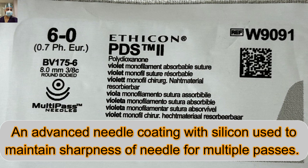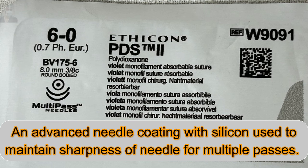Like this 6-zero needle — a very fine needle — it is a three-eighths circle with a smaller circle. The length is 8 mm and it is a round body. You can see there is a circle with a dot inside — it is a round body and the tip is blunt. This is just for demonstration: the smaller the needle, basically the finer the suture material will be. Here we are using 6-zero.